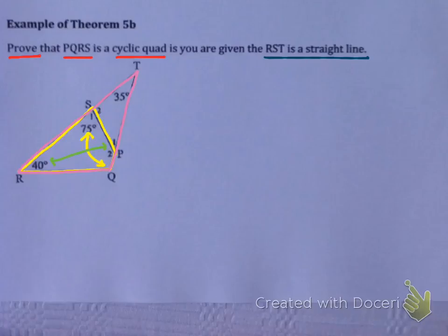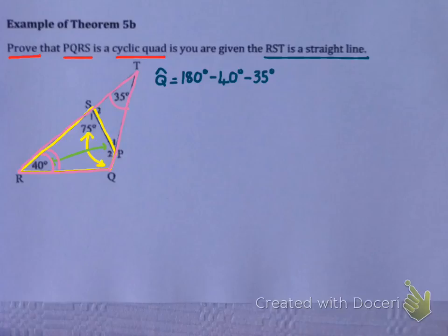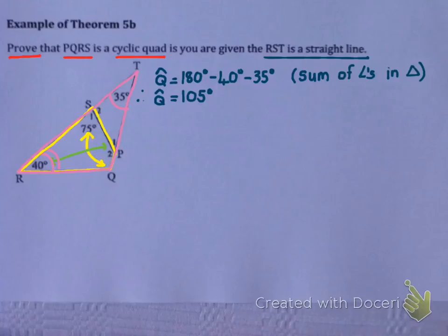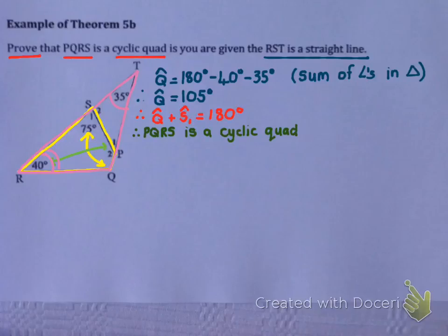Looking at the triangle, I have 40 degrees and 35 degrees, which means I can figure out Q. Angle Q equals 180 minus 40 minus 35 — because the sum of angles in a triangle — so angle Q equals 105. That means angle Q plus angle S1 equals 180, because 105 plus 75 equals 180. I have one pair of opposite angles supplementary, so PQRS must be a cyclic quad. Reason: opposite angles are supplementary.